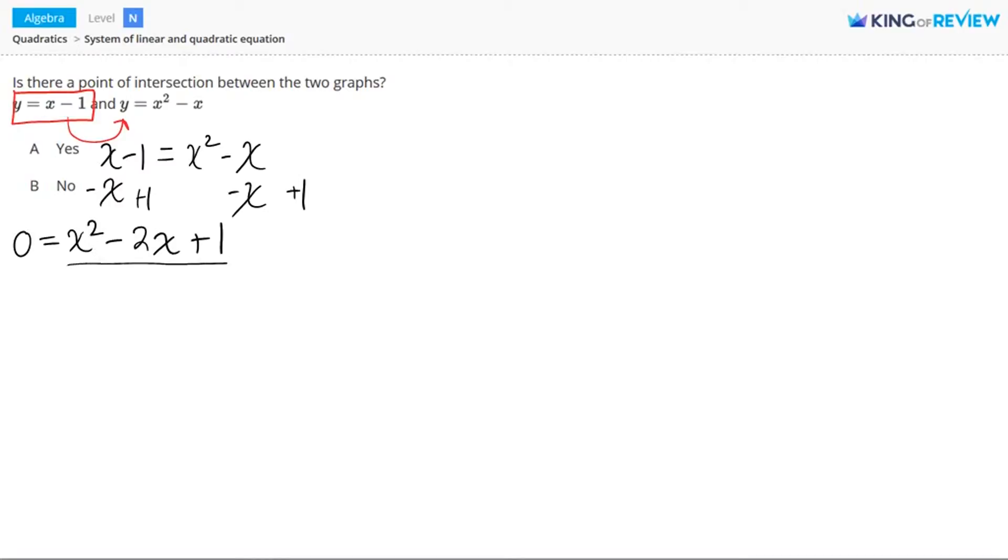Now we want to factor this portion of our equation. One method for doing that is using a factorization box. I'll put my x squared term here, and I'll put my constant term here.